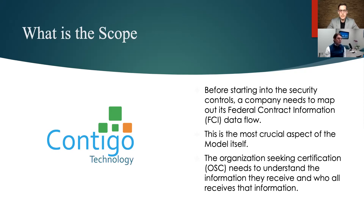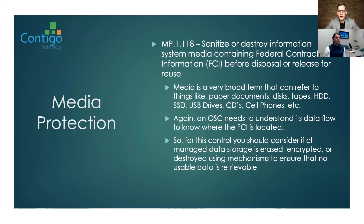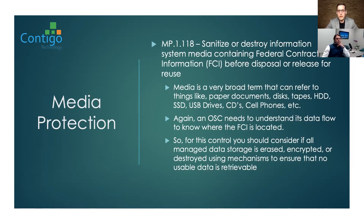We don't have enough time to go through all 17 practices — that's what your registered practitioners and registered provider organizations are for. But I want to give one example so viewers can understand the process for each practice. We'll go through media protection. For level one, there is only one practice required: media protection 1.118, which states 'sanitize or destroy information system media containing federal contract information before disposal or release for reuse.'